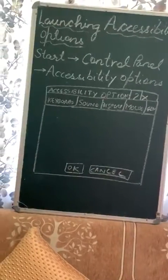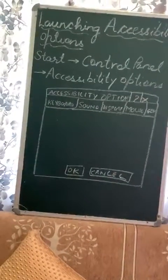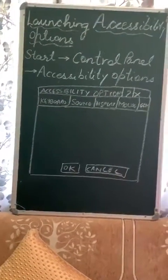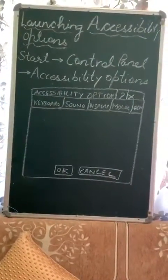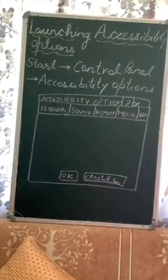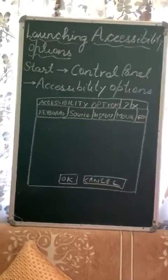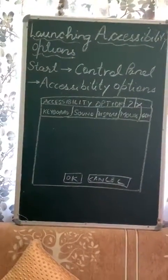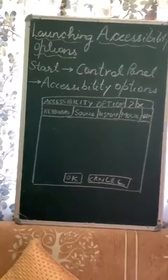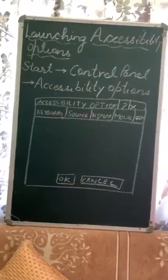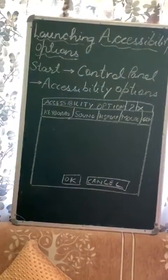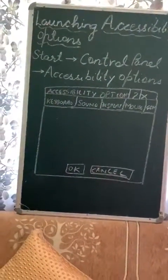Lastly, you can see two buttons — OK and Cancel. The OK button is to confirm the settings, and Cancel is to close the dialog box. In my next video we'll be discussing the various tabs individually. That's all for now, thank you.